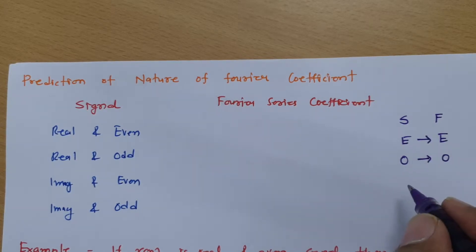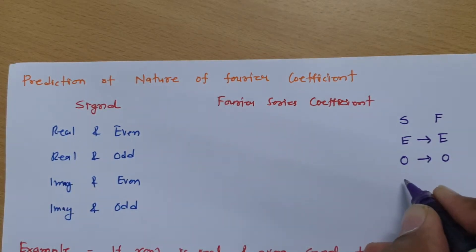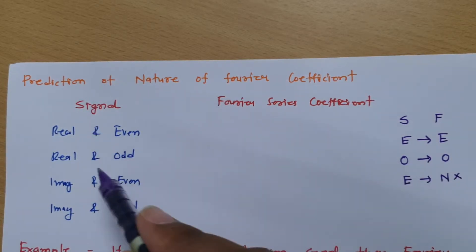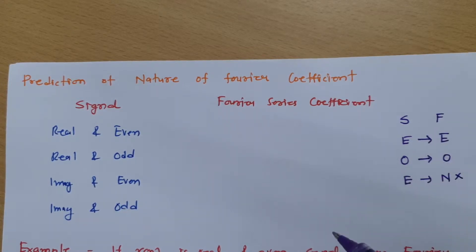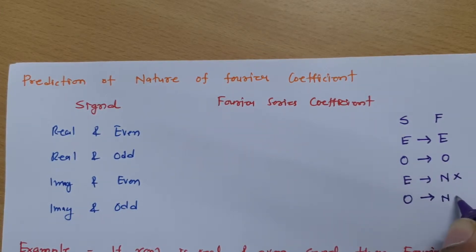Now, another thing — how does the nature change? Nature could be real or imaginary. If you have an even signal, then the nature will not change — meaning a real-to-real translation will happen from the signal to the Fourier coefficient. But if the signal is odd, then the nature will change. Let us try to understand this.